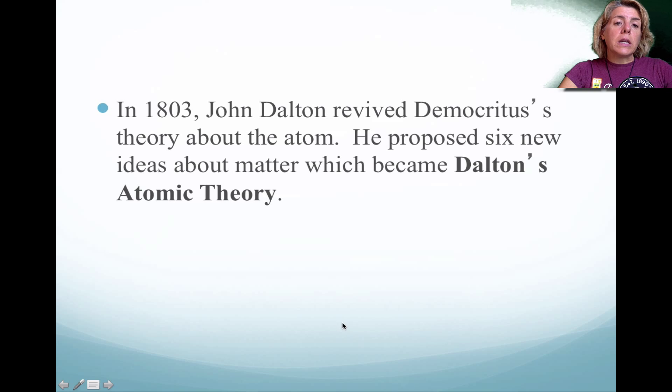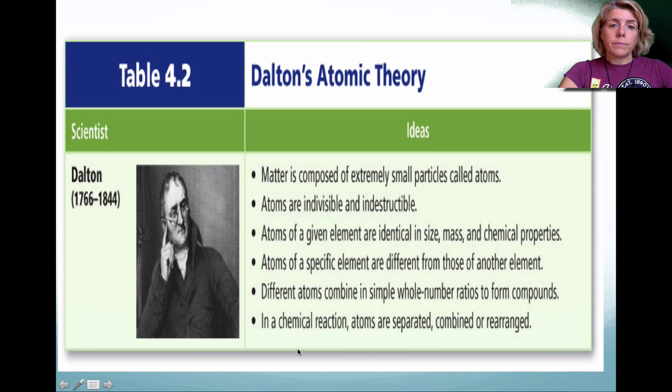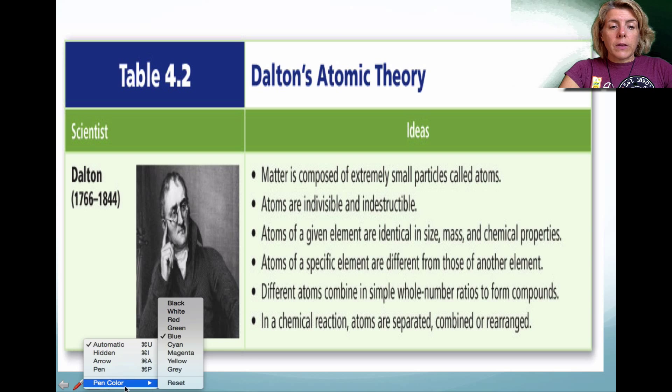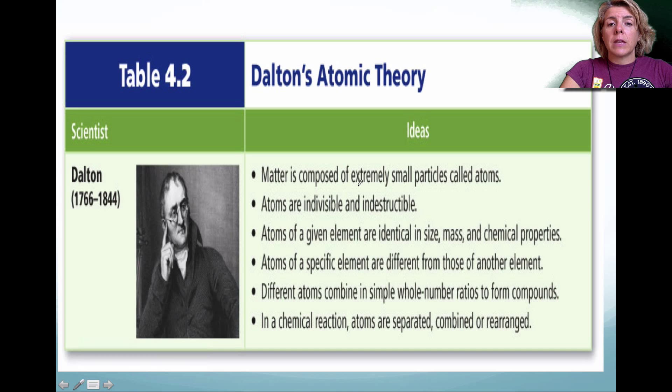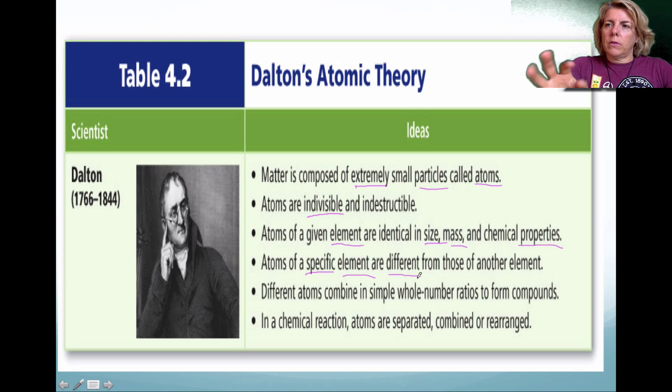Luckily, in 1803, John Dalton took Democritus's idea about the atom and proposed six new ideas about matter. This is what we call Dalton's atomic theory. He did multiple experiments and knew that matter had to have extremely small particles called atoms. He took Democritus's statement about atoms and revived it. He also stated that they are indivisible - you cannot get to a smaller piece of matter. He determined from his experiments that elements are identical in size, mass, and properties. So if you're looking at one type of atom, it has to have those specific characteristics. He also knew from his experiments that specific elements are different from another type of element. He was able to determine different types of atoms.